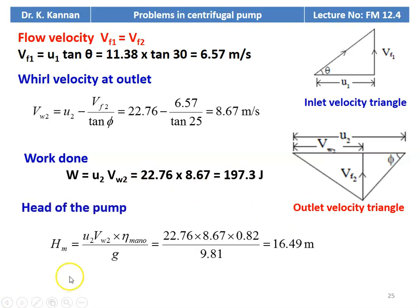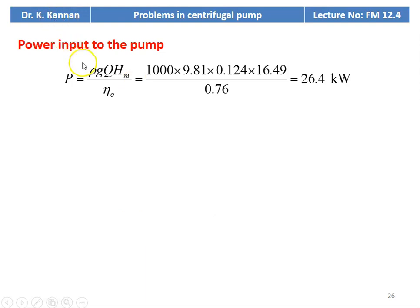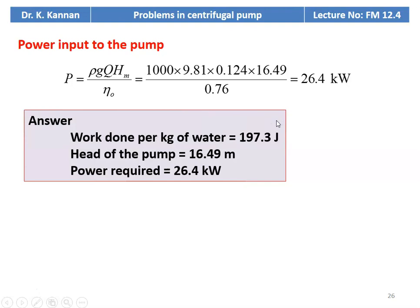The manometric head from the definition of manometric efficiency: manometric head equal to U2 VW2 into manometric efficiency divided by g, substituting: 22.76 into 8.67 into 0.82 divided by 9.81 equal to 16.49 meter. Discharge Q equal to pi D2 B2 into VF2: 3.14 into 0.3 into 0.02 into 6.57 equal to 0.124 meter cube per second. Power input P equal to rho g Q Hm divided by overall efficiency: 1000 into 9.81 into 0.124 into 16.79 divided by 0.76 equal to 26.4 kilowatts. Answers: work done 197.3 J/kg, head 16.49 m, power 26.4 kW.